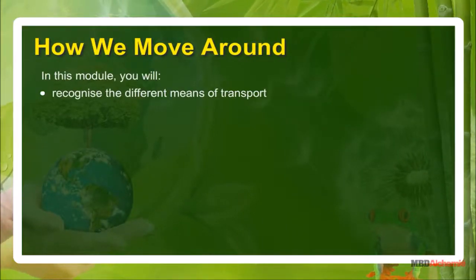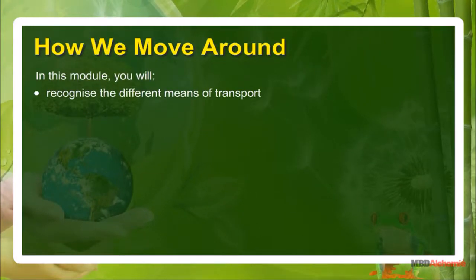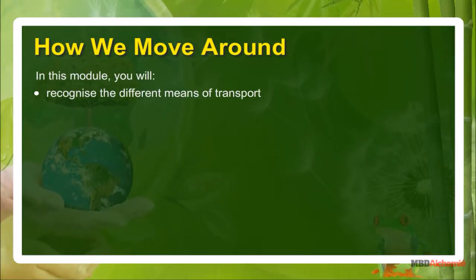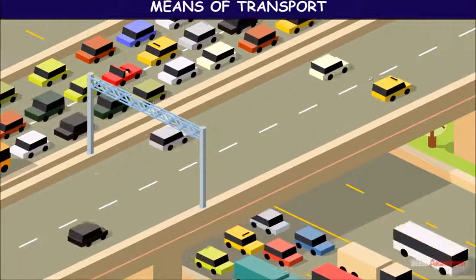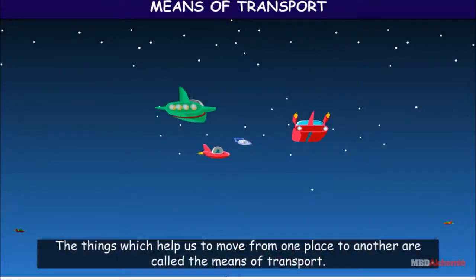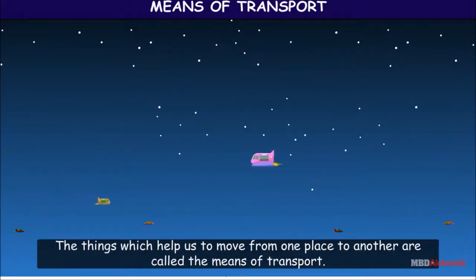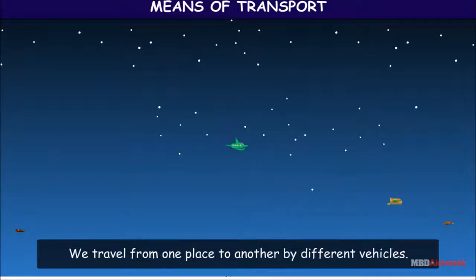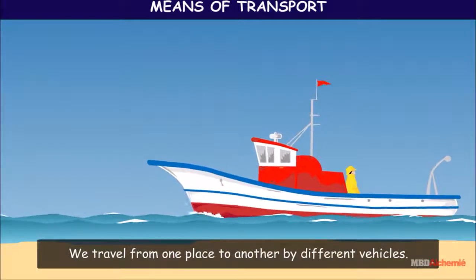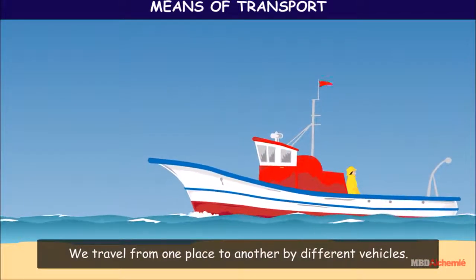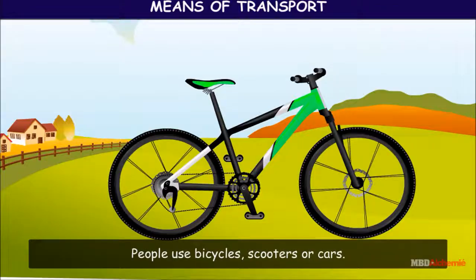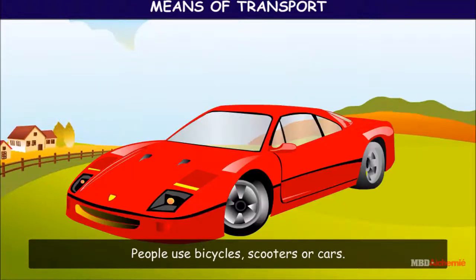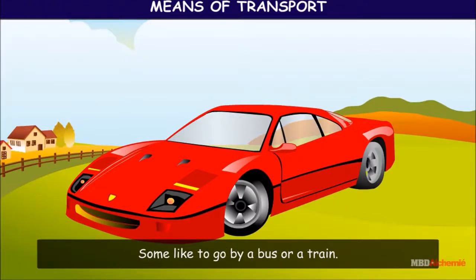In this module you will recognize the different means of transport. The things which help us to move from one place to another are called the means of transport. We travel from one place to another by different vehicles. People use bicycles, scooters, or cars.